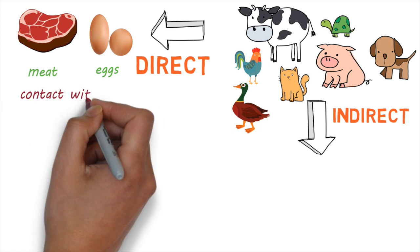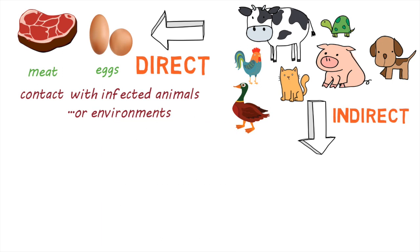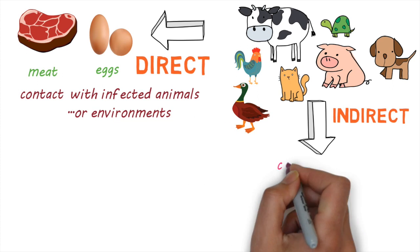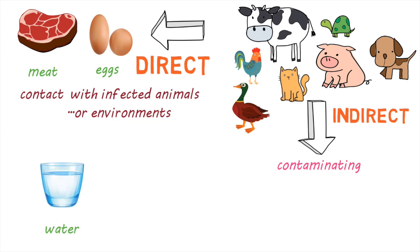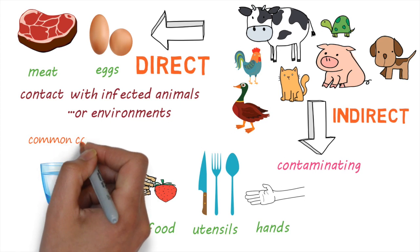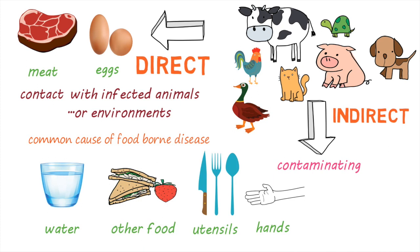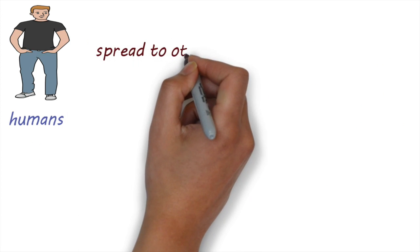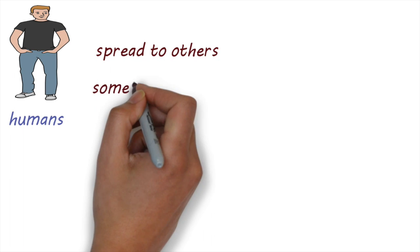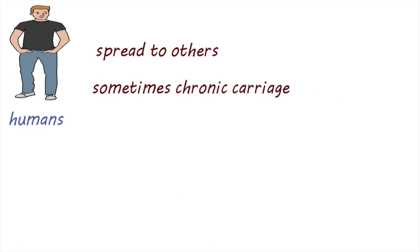Salmonella can also spread through direct contact with infected animals or their environments. It can also spread indirectly by contaminating water, other foods, utensils like knives and cutting boards, or the hands of someone who handles food. Salmonella is one of the most common causes of foodborne diseases in the world. People with Salmonella infection can also spread the infection to others, and sometimes people can carry Salmonella for a long time without showing any symptoms.